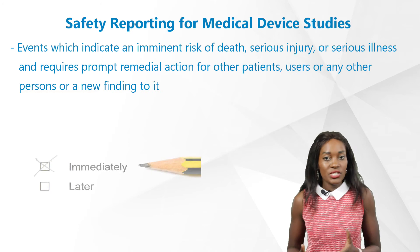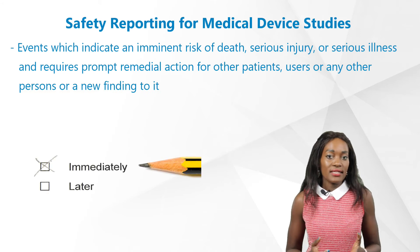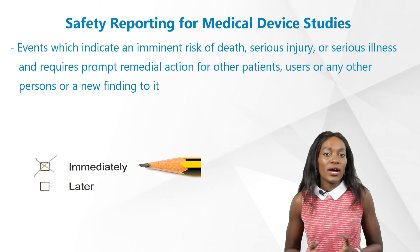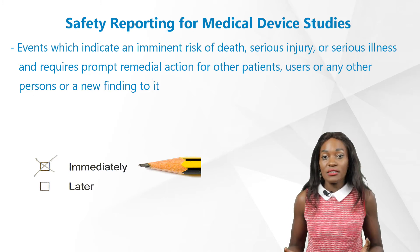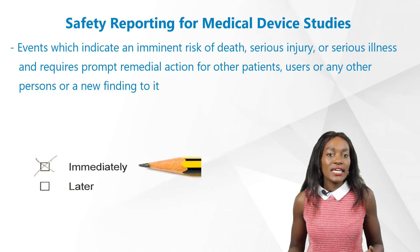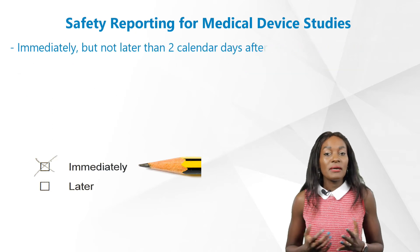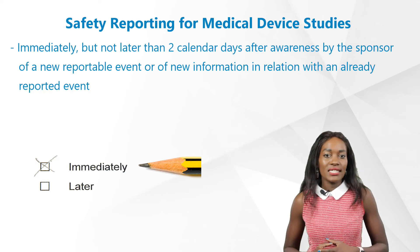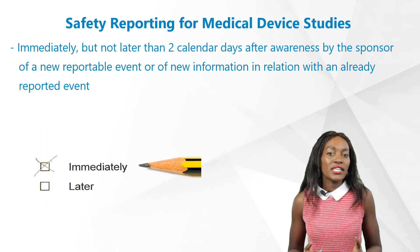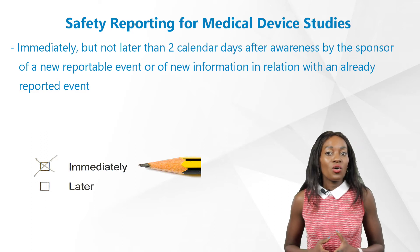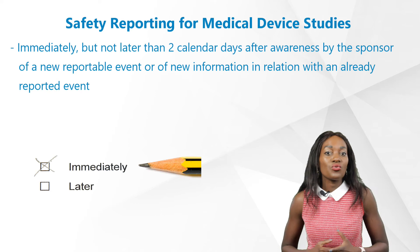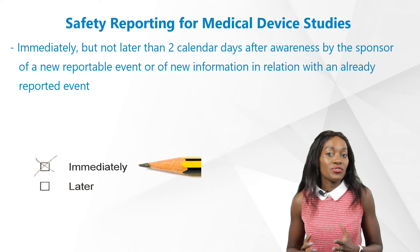Events which indicate an imminent risk of death, serious injury or serious illness and require prompt remedial action for other patients, users or any other person — or a new finding related to it — must be reported immediately, but not later than 2 calendar days after awareness by the sponsor of a new reportable event or of new information in relation to an already reported event.